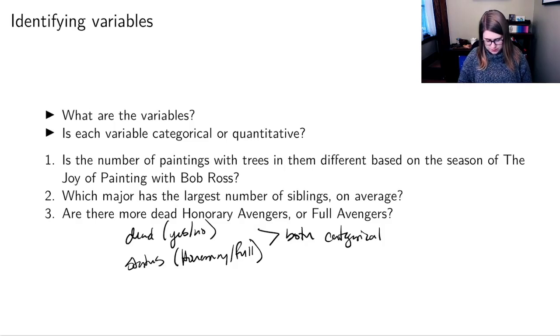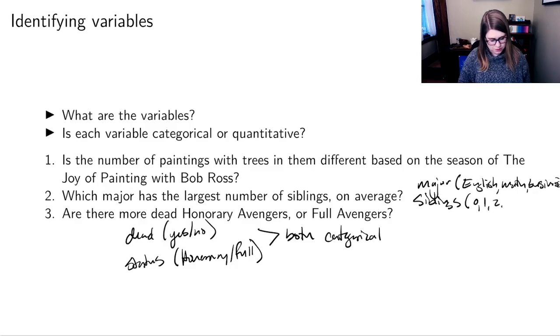Now we've got the question, which major has the largest number of siblings on average? And again, we've got two variables. We've got major, which could be like English, or math, or business. And then we've got siblings. And that could be 0, 1, 2, like that. So I think major is categorical. And siblings is quantitative.